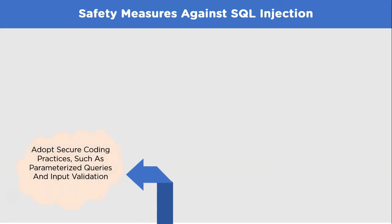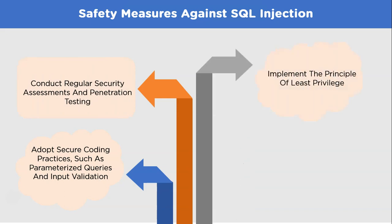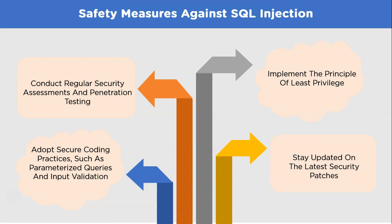Safety measures against SQL injection include adopting secure coding practices such as parameterized queries and input validation, conducting regular security assessments and penetration testing to identify SQL injection flaws, implementing the principle of least privilege to limit database access rights for application users, and staying updated on the latest security patches and updates for frameworks and applications.